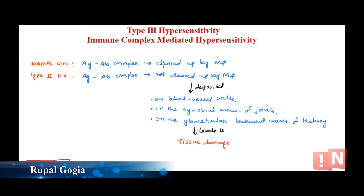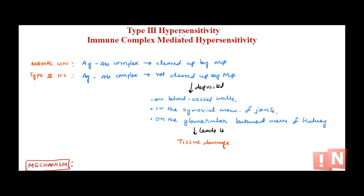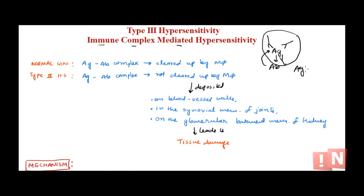Welcome back. Today we are talking about type 3 hypersensitivity, also known as immune complex mediated hypersensitivity. In normal conditions, when any antigen enters our body, the immune system tries to get rid of it by producing antibodies against that antigen. The antibody binds to the antigen, and this antigen-antibody complex is what we call an immune complex.